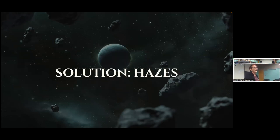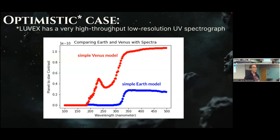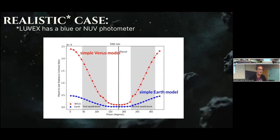The solution is everybody's least favorite phenomenon: hazes. Let's say the optimistic case — LUVOIR is equipped with a high-throughput, low-resolution ultraviolet spectrograph going from 0.1 microns all the way to 0.5 microns. We spend less than a year observing an object and we get a spectrum, from which we could say 'that looks like Venus' or 'that looks like Earth.' But what's more likely is that LUVOIR ends up equipped with some kind of blue photometer, since UV is a very difficult regime to build instruments for.